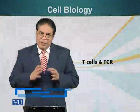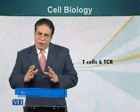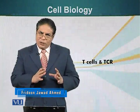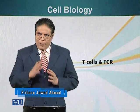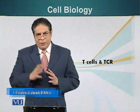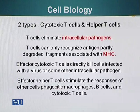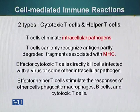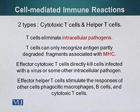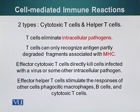So far we've been talking about the B cells. Now let's move our focus to the T cells. They also play a very important role in the immune system. Let's talk first about T cells and also the receptor, called the T cell receptor, abbreviated as TCR. There are two types of T cells: cytotoxic T cells and helper T cells. There are actually more but we are going to focus on these two.